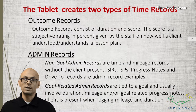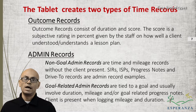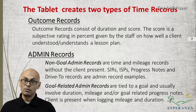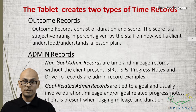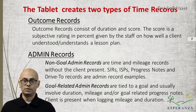Outcomes contain a duration and a score. Admin records usually are not with the client. Service updates, SIRs, ISPs, progress notes, and drive-to records are examples of admin record types. Admin records may contain a duration, miles driven with and without a client, or a general note about a client. Please discuss with your supervisor if you have any questions on these definitions.